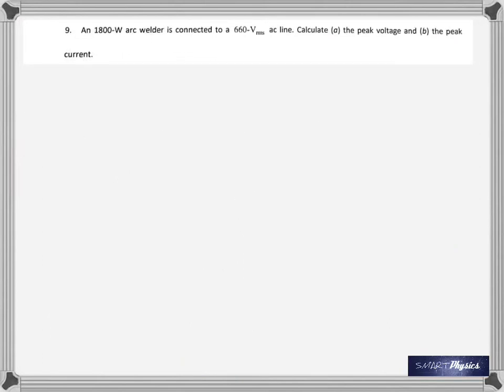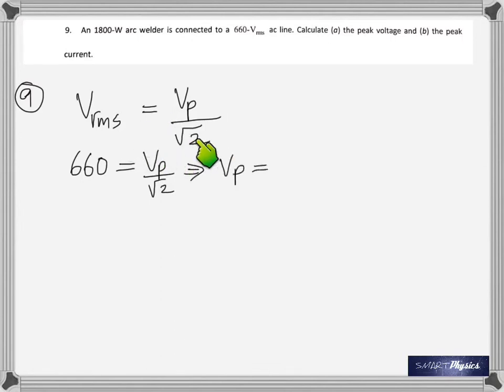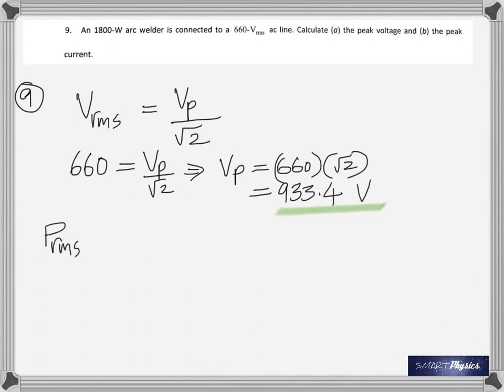Ninth one: an 1800 watt arc welder is connected to a 660 volt RMS AC line. Calculate the peak voltage and the peak current. Now in AC, we know that RMS voltage is peak voltage divided by square root 2. That's an important formula there. So from that, rearrange and find the peak voltage: 660 times square root 2 gives you 933.4 volts. And the power, RMS power, is the product of RMS voltage and RMS current. Therefore from that, you can find the RMS current.